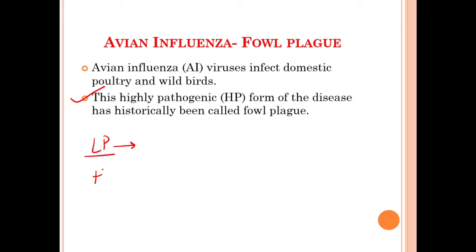If the low pathogenic form infects any domestic poultry or wild bird, then avian influenza condition will not develop — there will not be much clinical manifestation of that virus. But if the highly pathogenic form of avian influenza virus infects any domestic poultry or wild bird, then the avian influenza condition will develop, which we have known for a long time as fowl plague.